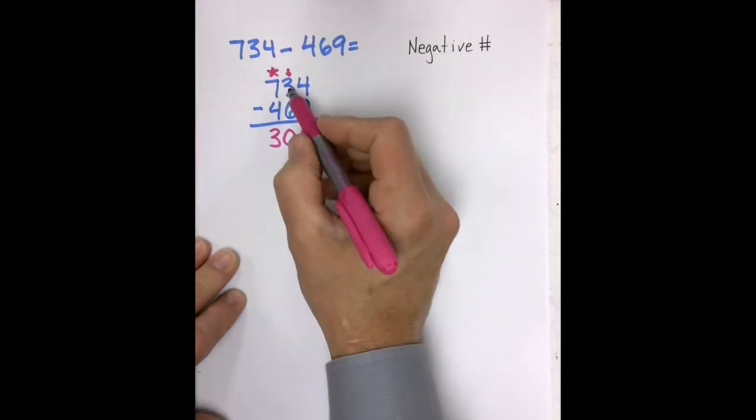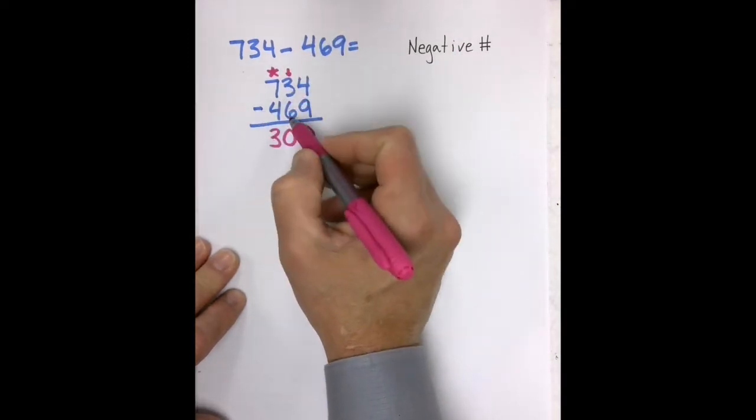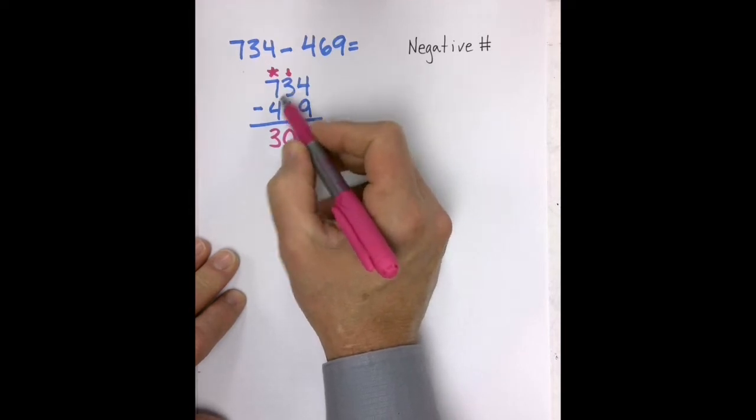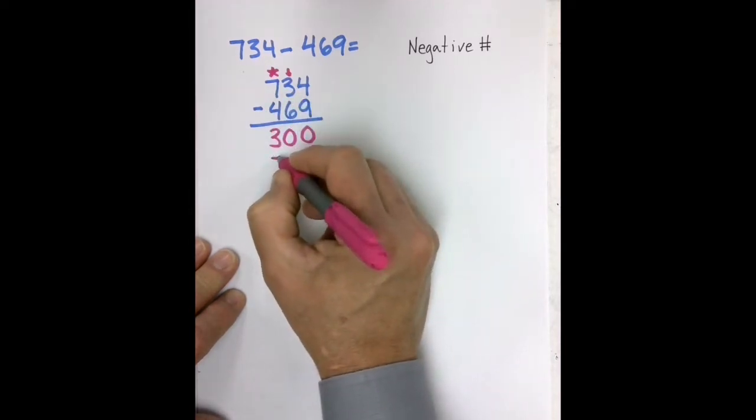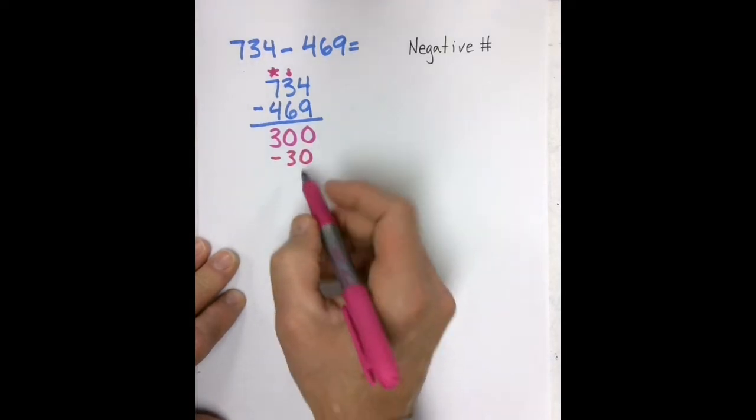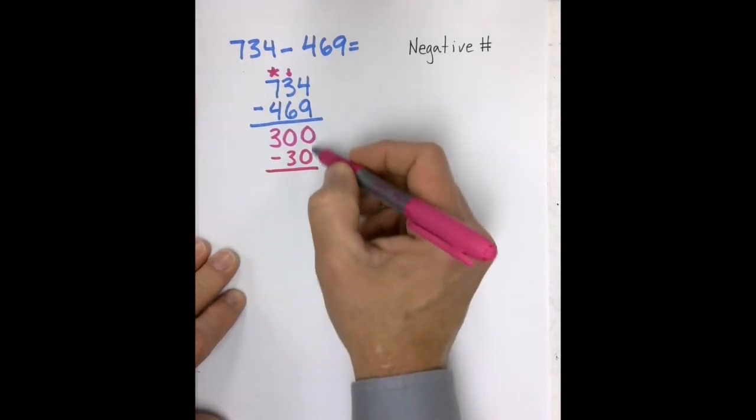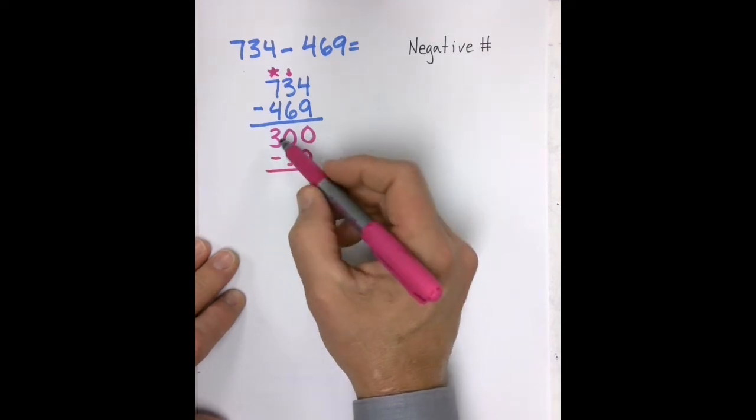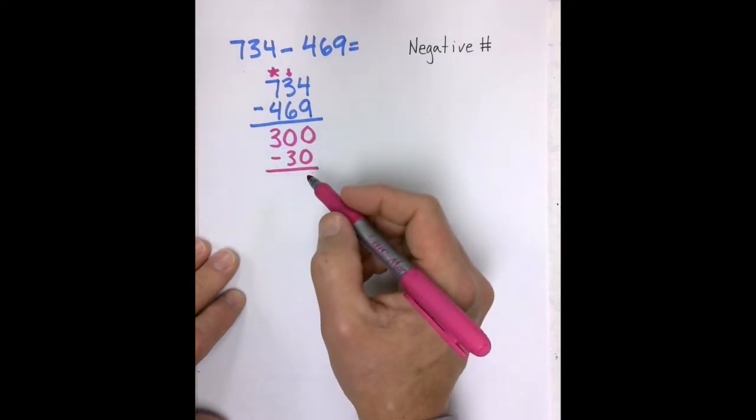Here I have three tens, and I'm subtracting six tens. Well, 30 minus 60 would be a negative 30. So I write that negative 30 here, and then I combine my 300 and my negative 30, which is the same as 300 minus 30.